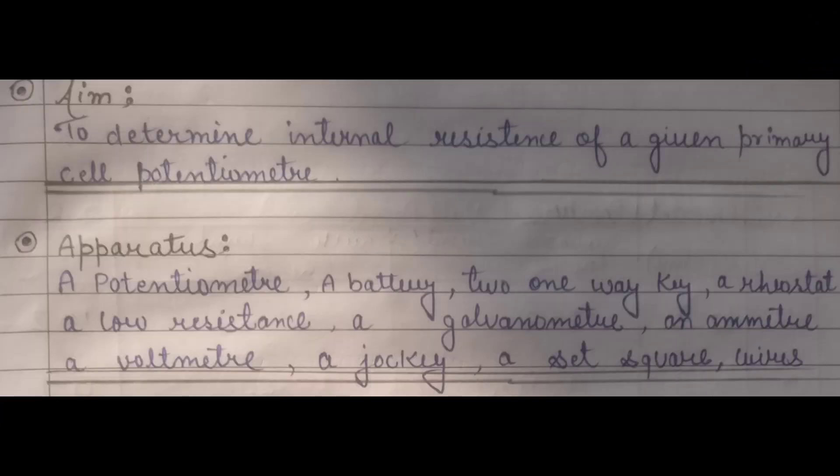The aim of this practice is to determine the internal resistance of a given primary cell using a potentiometer. The apparatus we require is a potentiometer, a battery, two one-way keys, a rheostat, low resistance, a galvanometer and ammeter, a voltmeter, a jockey, a set square, and wires.